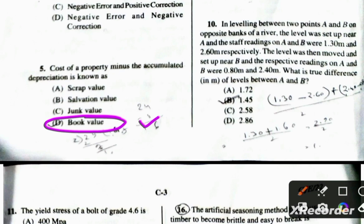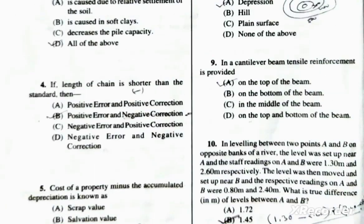Cost of property minus depreciation gives book value. The salvage value is also referred to as scrap value — these terms are used interchangeably.